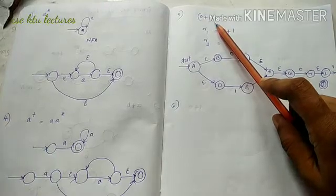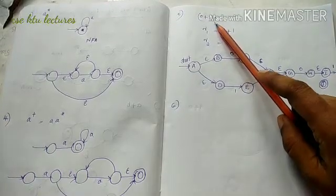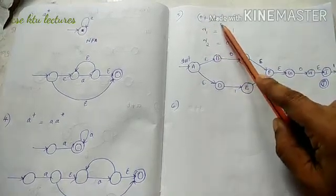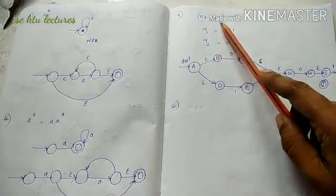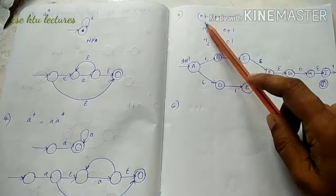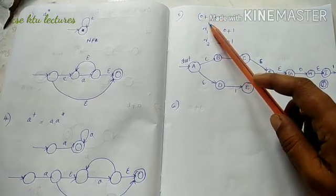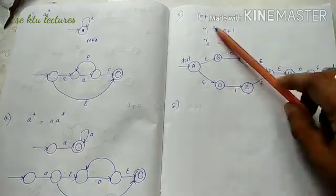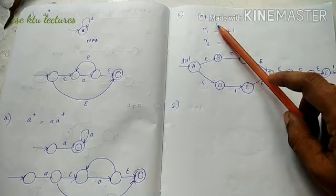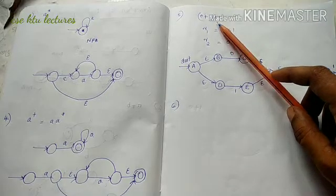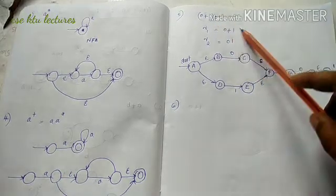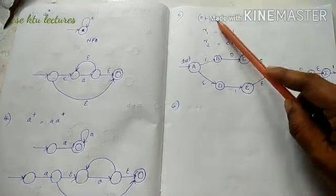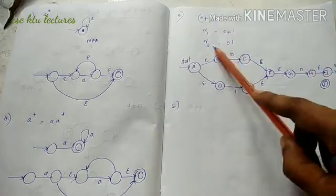The regular expression is (0+1)*·01. What does this mean? A string ends with 0 and 1, and at the beginning there is a combination of either 0 or 1. So the strings created should end with 01. That is the meaning of the regular expression. We have two parts: R1 is 0+1, and R2 is 0 followed by 1.